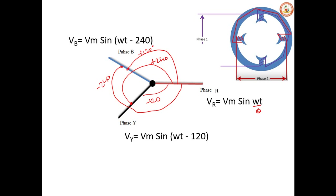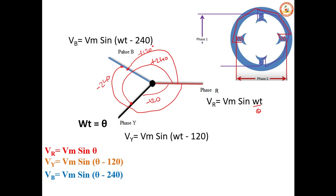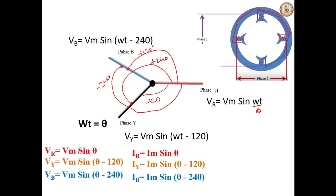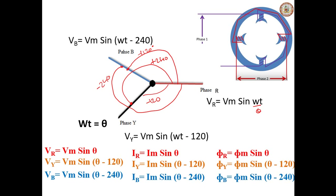Generalizing the equations: taking ωt as θ, V_R = V_M sin θ, V_Y = V_M sin(θ − 120°), and V_B = V_M sin(θ − 240°). Similarly, the respective three-phase currents are I_R, I_Y, and I_B, and the three fluxes in the stator windings are φ_R, φ_Y, and φ_B. At any instant, the resultant of these three fluxes is called the stator flux or rotating magnetic field.